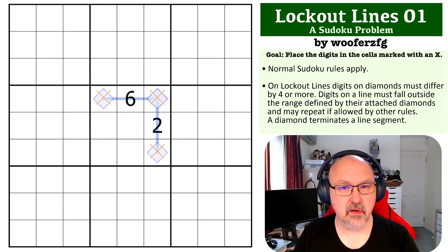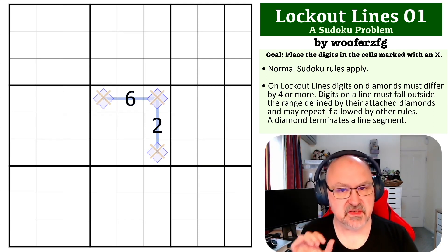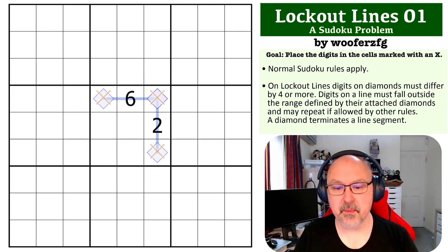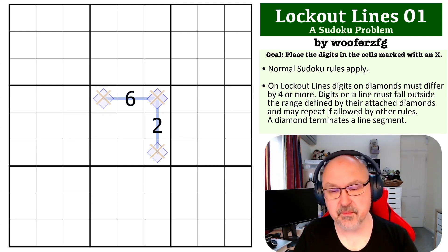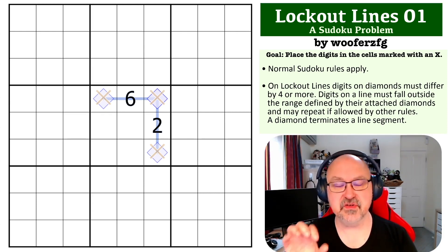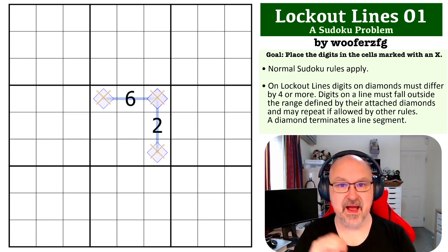Along lockout lines, the digits in the diamonds must be at least four apart. And within a line between diamonds, the digits on the line cannot be between or equal to the number in the diamonds. So whatever is on the diamonds, what goes on the line must be outside the bounds of the digits in the diamonds.